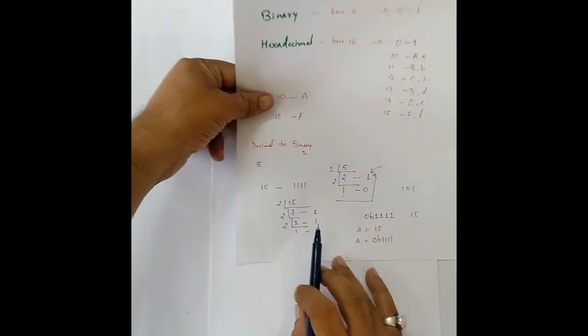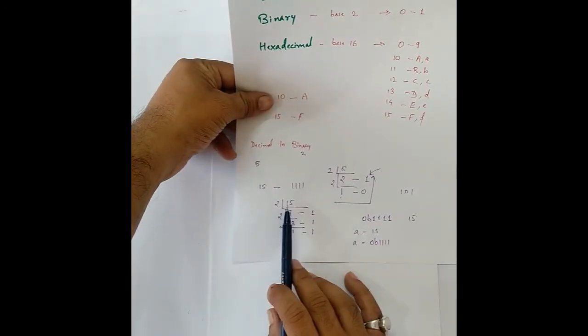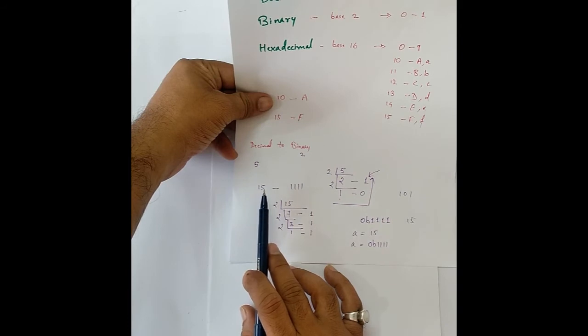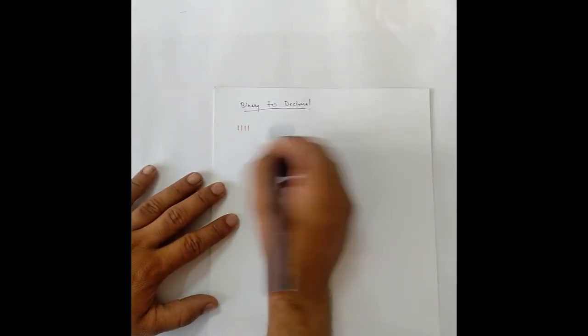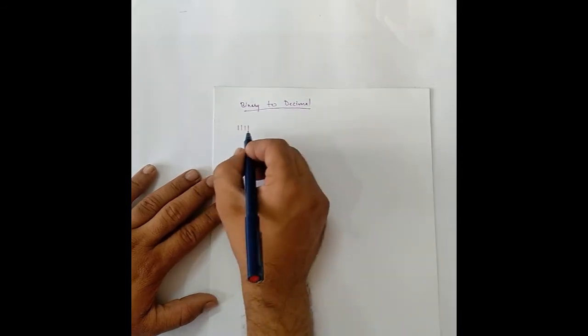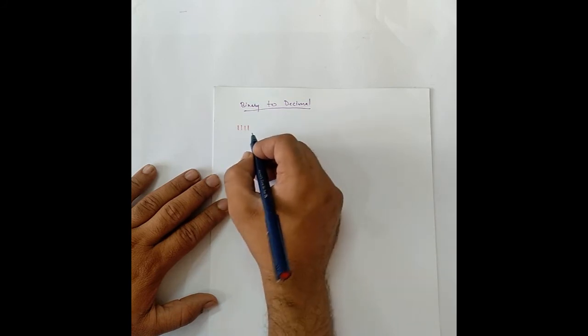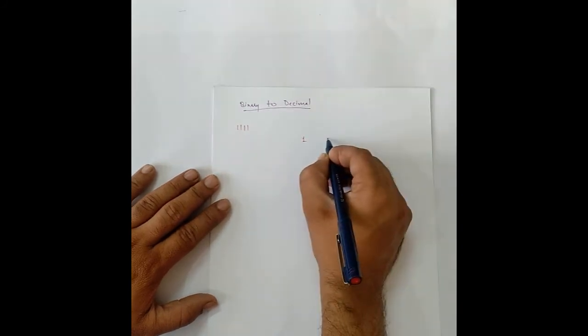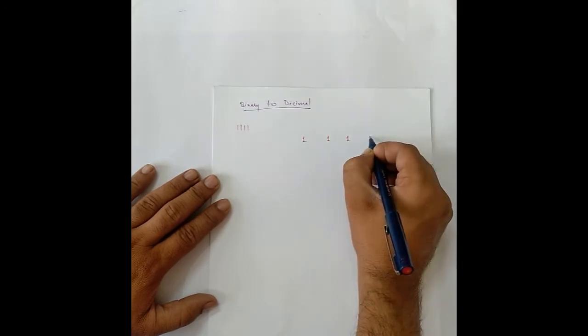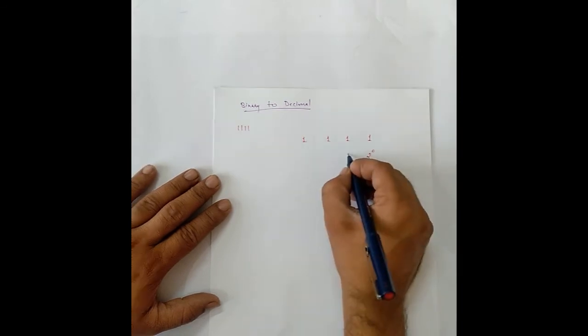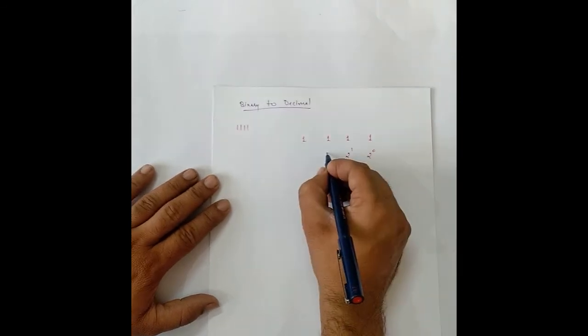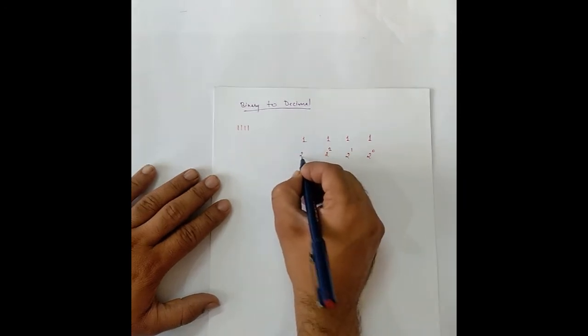In this example, we had taken an example of 15. 15 gives us 1, 1, 1, 1. So let's take 1111 and see if it gives us 15. Each of these numbers has a weight, and since this is a binary number, the weightage is in powers of 2. We have 1, 1, 1, 1. The lowest number has a weightage of 2 to the power 0. This one has a weightage of 2 to the power 1, 2 to the power 2, and 2 to the power 4.